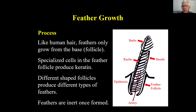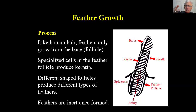The feather growth process is like human hair — it only grows from the base. Specialized cells in the feather follicle produce keratin, just like your fingernails or hair. Different shapes of follicles produce different types of feathers — a downy feather comes from a different follicle than a flight feather. Once feathers are formed and grow out, they are inert. There's no blood supply to them, so all care must be done externally. Blood from an artery feeds the follicle, and the feather grows out from there.